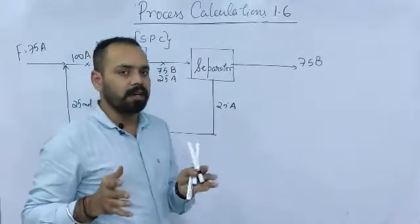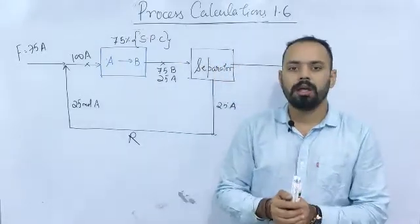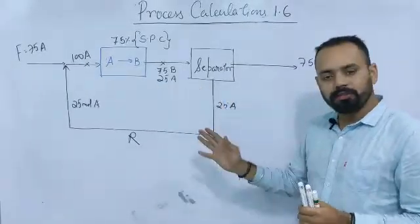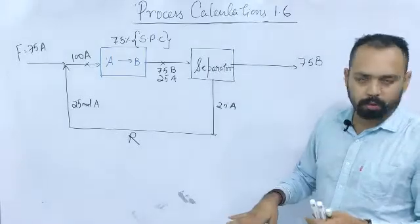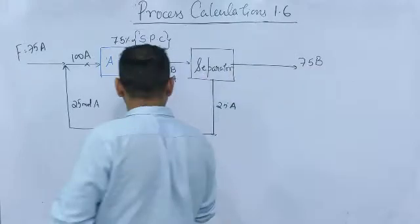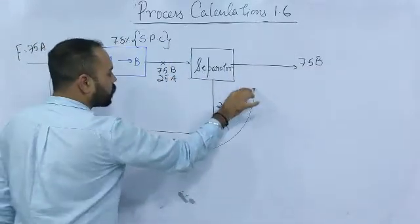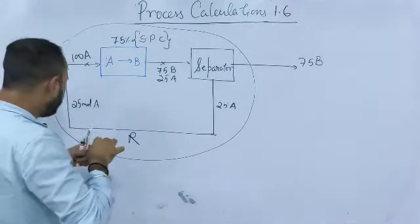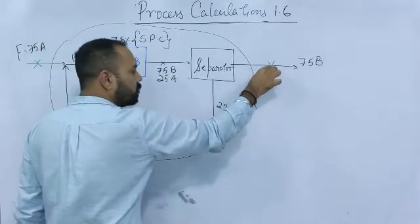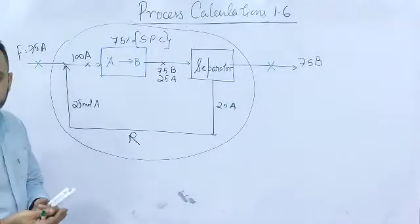The conversion defined between the reactor inlet and outlet is called single pass conversion. When there is a single unit in a reacting system, you can define only one type of conversion. But when there are multiple units with recycling present, you can define two types of conversion. One is single pass conversion. The other is defined by considering the overall system — between the fresh feed point and the product exit point — called overall conversion.